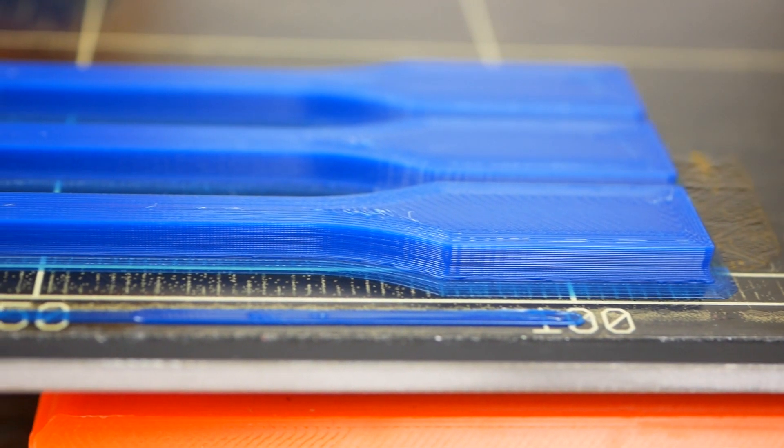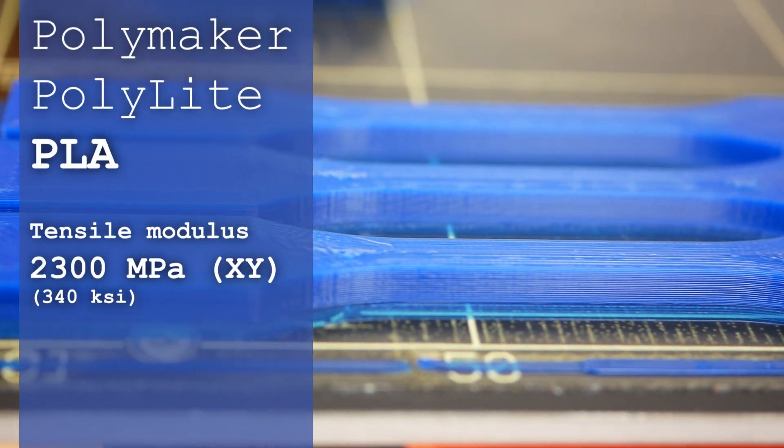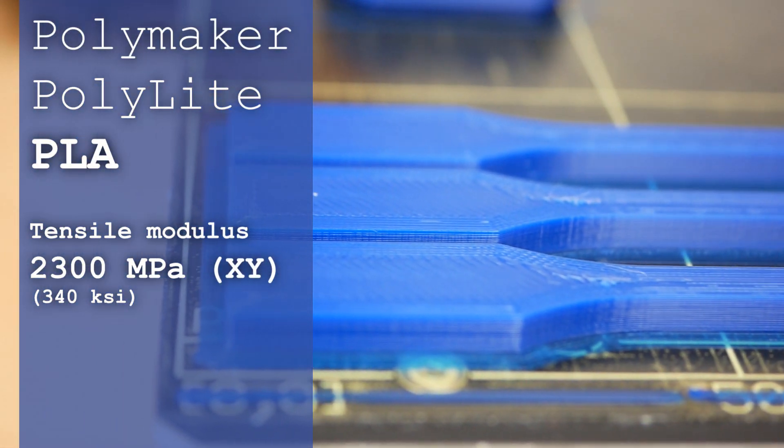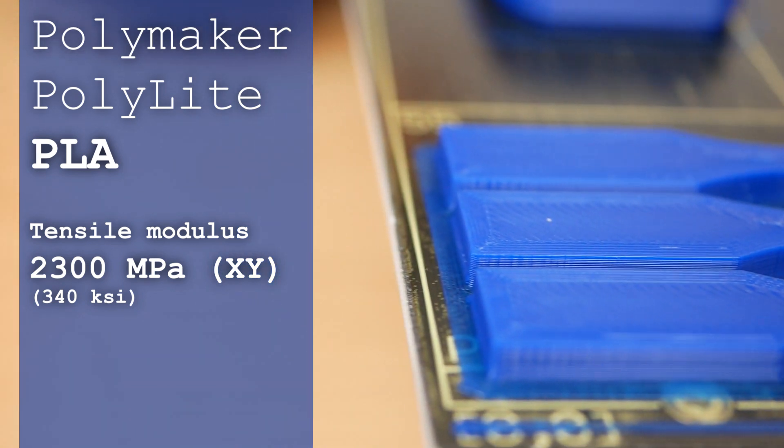With a modulus of around 2300 MPa, it's way more rigid than ABS but seems to be slightly softer than some other brands of PLA I've tested before.